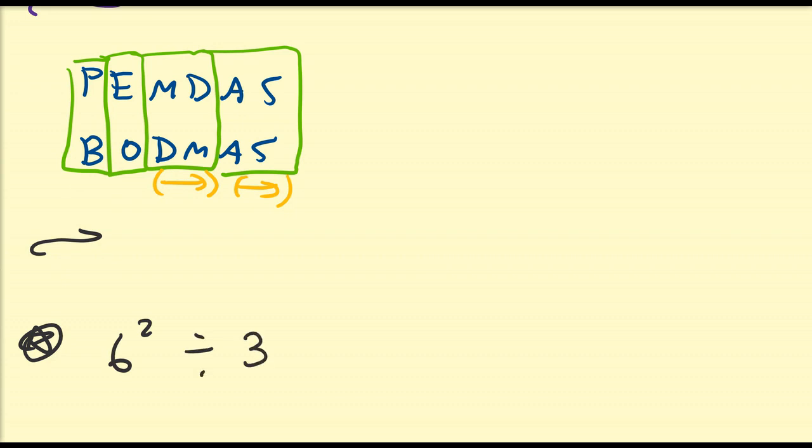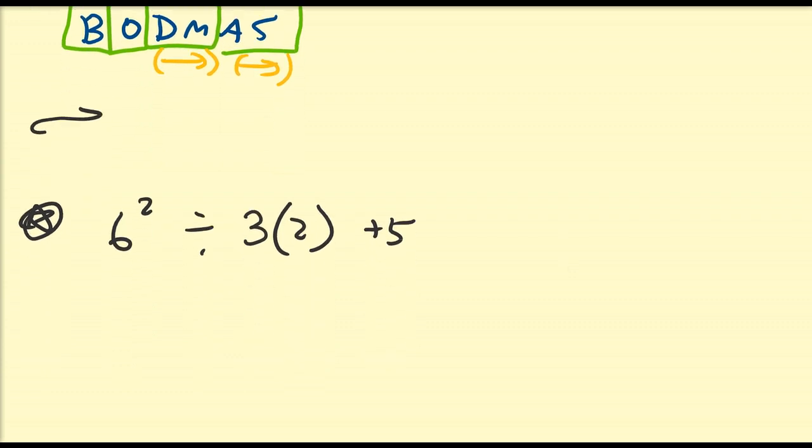Alright, so let's take a look at the problem we are interested in today. So six squared divided by three parentheses two plus five. There's going to be two ways that one probably will go about this. So I'll illustrate both of these ways here. So if we strictly look at the second point that I mentioned, that three parentheses two is just a lazy way of writing three times two. So this is six squared divided by three multiplied by two plus five.